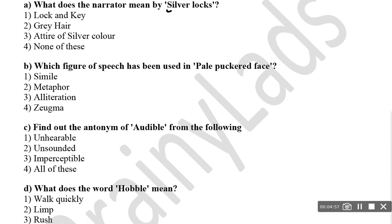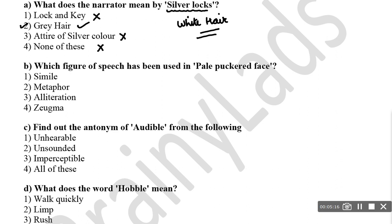What does the narrator mean by 'silver locks'? It means gray hair, not a lock and key, not attire of silver color. The right answer is gray hair. Which figure of speech has been used in 'pale puckered face'? Whenever there is a repetition of consonant sound, especially at the beginning of words — here we have the 'P' sound repeated — that is called alliteration.